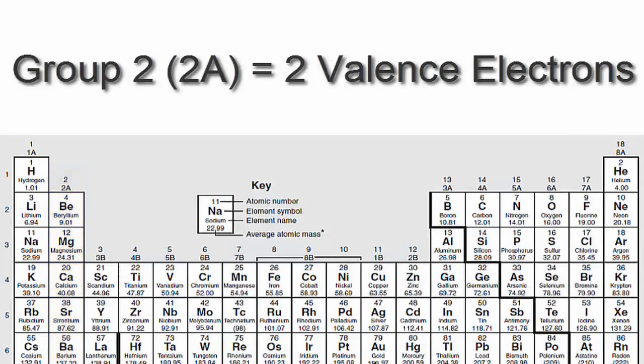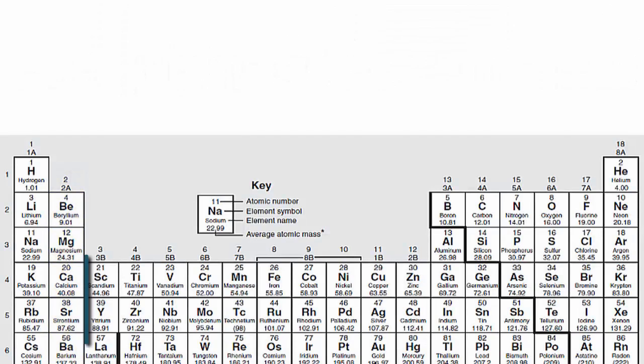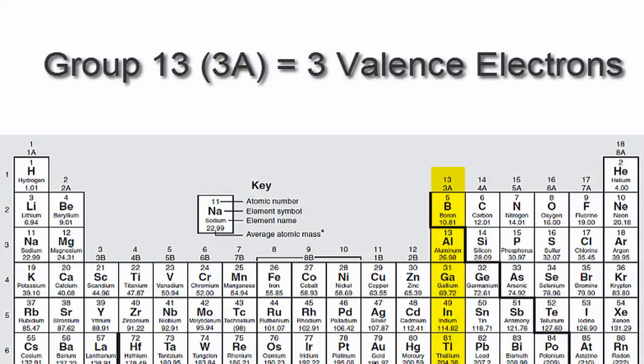If you look at group 2 or 2A, you'll see that those elements have two valence electrons. We'll skip over the transition metals since they're a bit more complicated and probably don't apply to you.